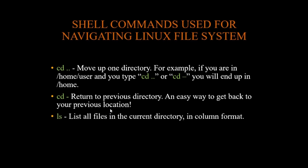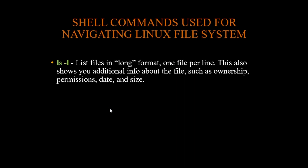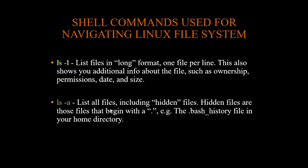The ls command lists all files in the current directory in column format. ls also accepts the argument -l, which lists files in long format, one file per line. This also shows additional information about the file such as ownership, permissions, date, and size. ls also takes the argument -a, which lists all files including hidden files.